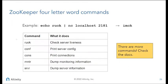ZooKeeper, as we already introduced, has these things called four letter word commands: ruok, conf, cons, monitor, server. These are quick commands you can send to ZooKeeper and it will output text information that helps you understand whether ZooKeeper is up. In the case of 'monitor', it dumps a bunch of data that you can feed into something like Prometheus to understand the health of your server. There are a number of other commands — these are just some of the more common ones.